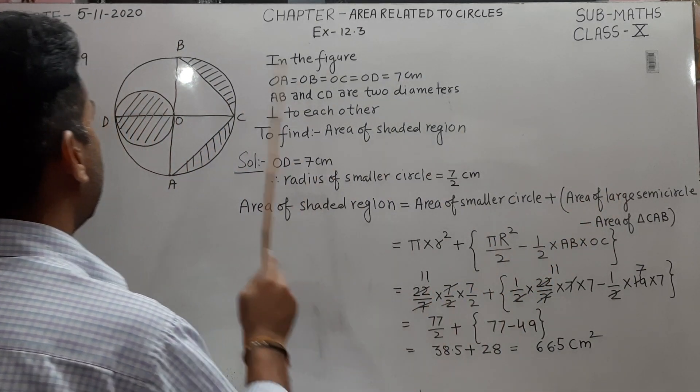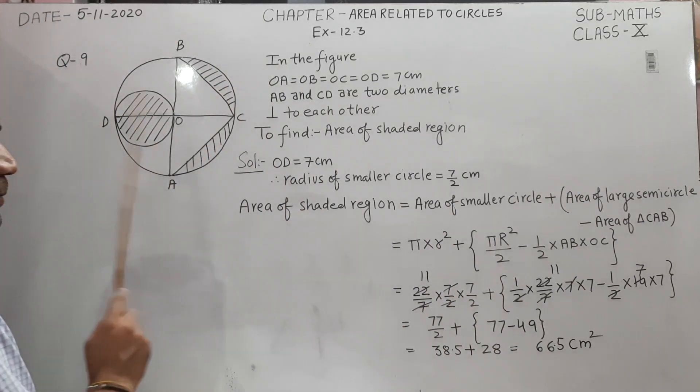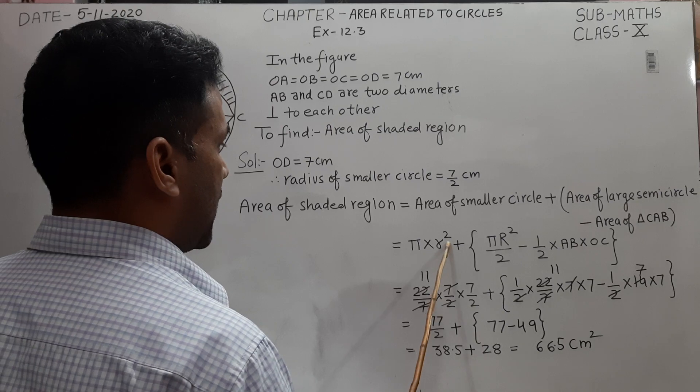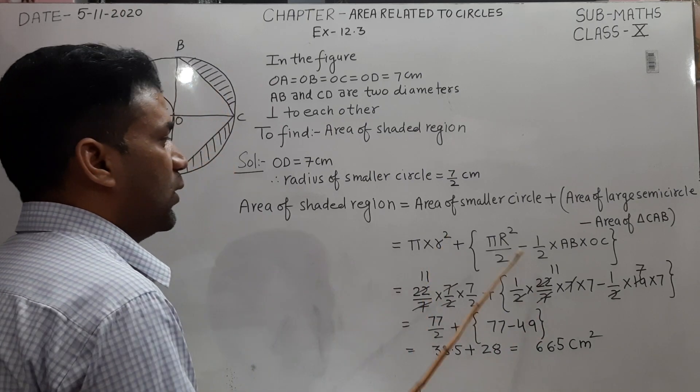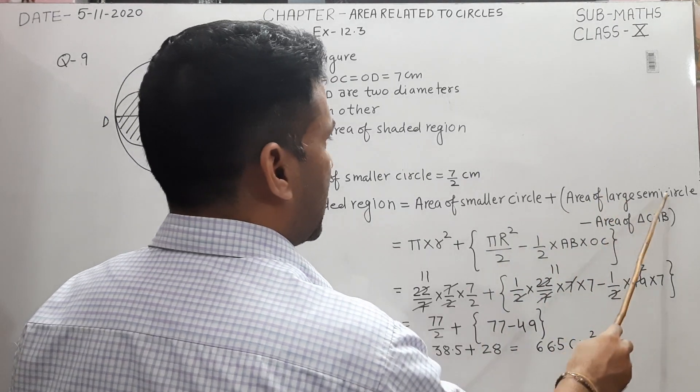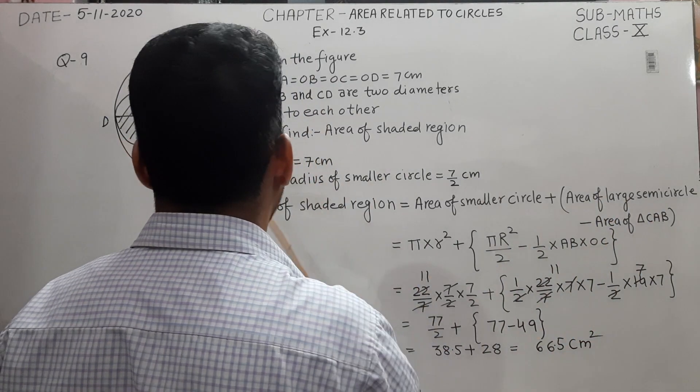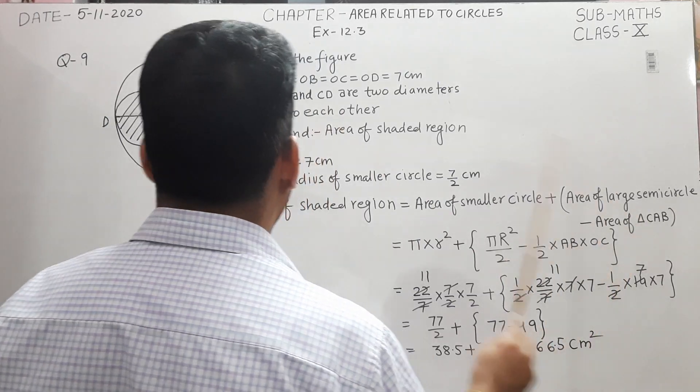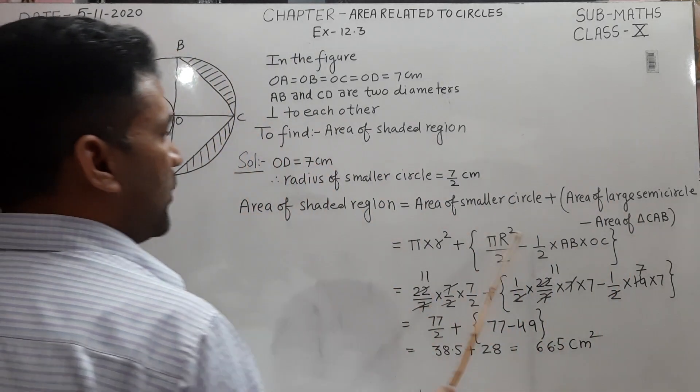Triangle area is 1/2 base times height, where base is AB and height is OC. The area of smaller circle is π(7/2)² plus the area of the large semicircle which is πr²/2, minus the area of triangle CAB which is 1/2 base times height, where base is AB and height is OC.